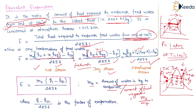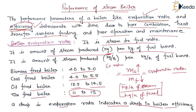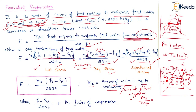The difference between evaporation ratio and equivalent evaporation is that equivalent evaporation is an extension of evaporation ratio. Me equals Ms divided by Mf — this is the evaporation ratio. If we multiply the evaporation ratio by the factor of evaporation, we get the equivalent evaporation. If a boiler has more equivalent evaporation, the boiler is performing very well, making it another indicator of boiler performance.